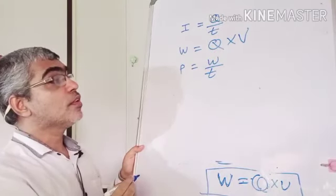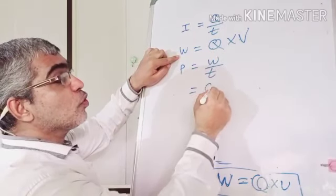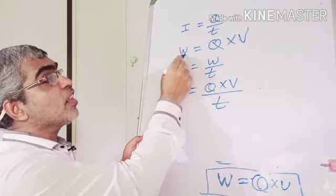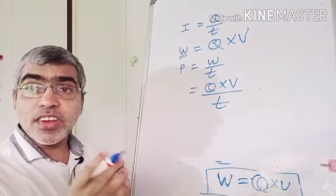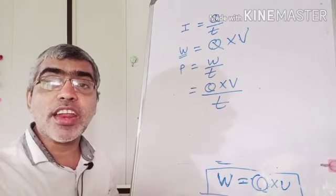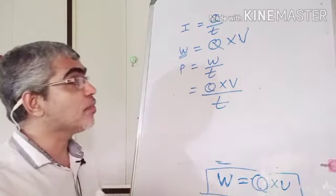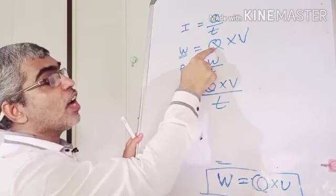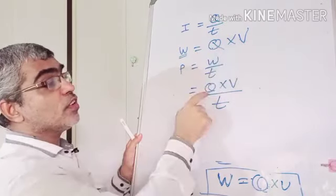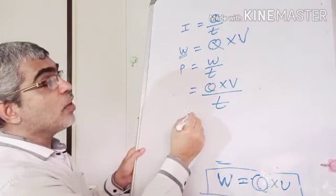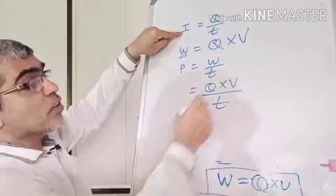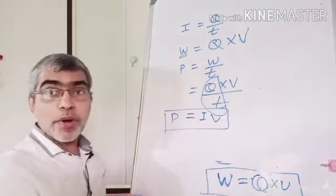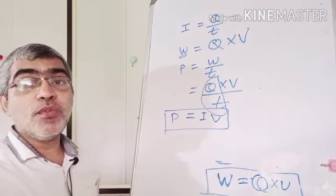This is power. The battery is doing work with charge and voltage. Power equals Q into V divided by T. Since I = Q/T, substituting gives power P equals V into I, or I into V.